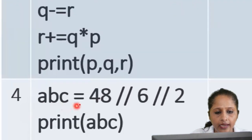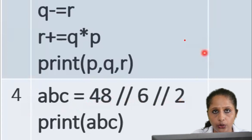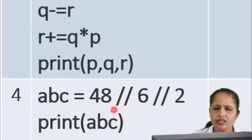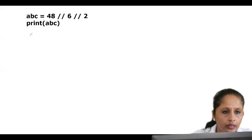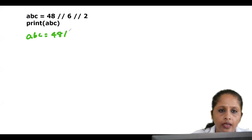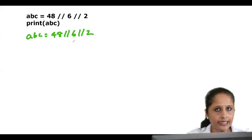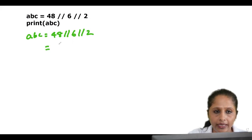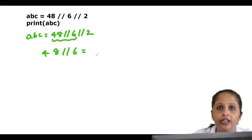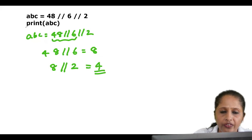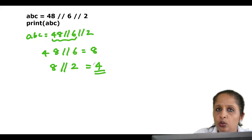Question 4: abc = 48 // 6 // 2. Note that abc is one variable, not three separate variables. Two floor divisions have the same precedence, so associativity is left to right: 48 // 6 = 8, then 8 // 2 = 4. Printing abc gives the output 4.